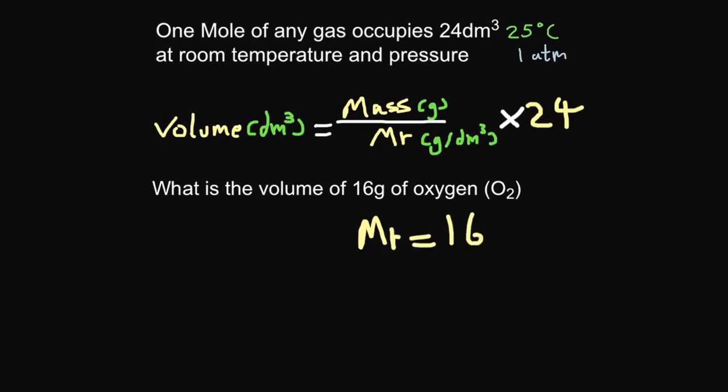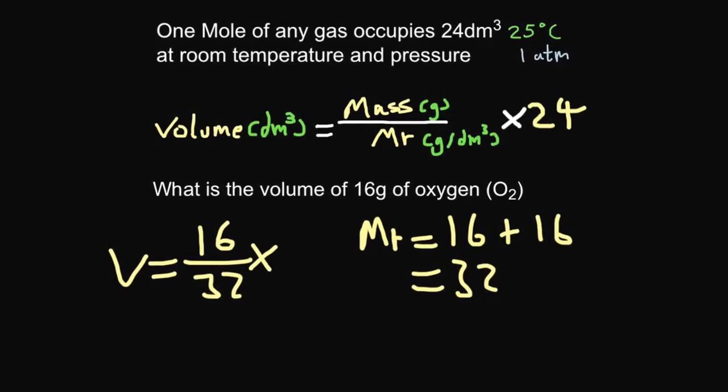However, notice we've got not one oxygen, we've actually got two oxygens, so that's 16 plus 16, so that's 32. So here's our equation. We've got volume equals mass divided by Mr, so our mass is 16, our Mr is 32, so that's 16 divided by 32 times by 24.